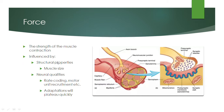Muscle force is influenced by two things: structural properties and neural qualities. Structural properties refer to the muscle itself — how big is the muscle, how much structure do we have to actually contract. Neural qualities refer to the nervous system telling the muscle to contract, and certain neural adaptations like rate coding, motor unit recruitment, and antagonist muscle inhibition. These factors basically make us stronger by allowing our muscle to contract with more force.